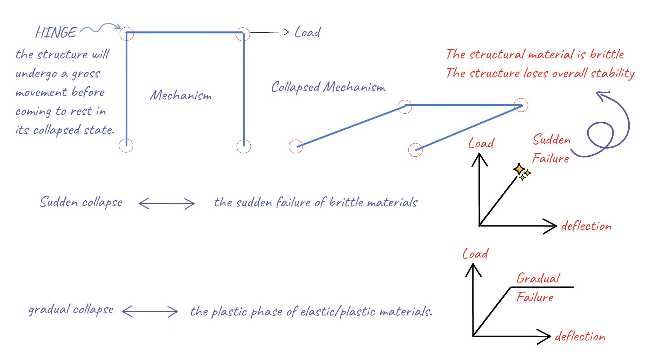Structural designers try to avoid using brittle materials, but this is not always possible. Although masonry and concrete exhibit some plastic behavior, the plastic phase is quite short compared with ductile materials such as steel, so collapses can be sudden. Because of this, the factor of safety for these materials is high.